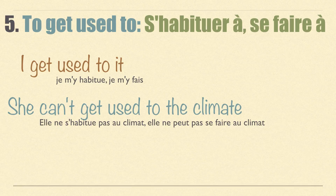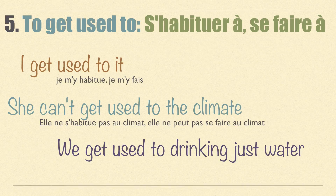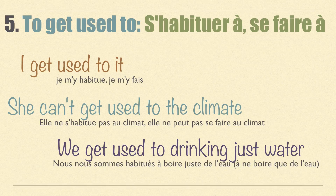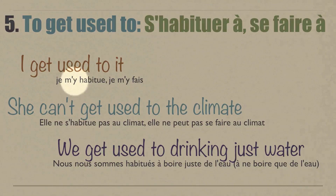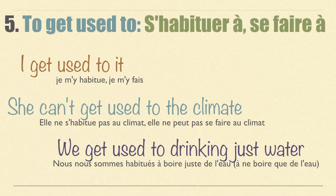'We got used to drinking just water' — nous nous sommes habitués à boire juste de l'eau. Note there are two instances of the pronoun nous because it is a reflexive verb: nous nous sommes habitués à boire juste de l'eau.